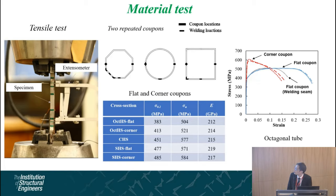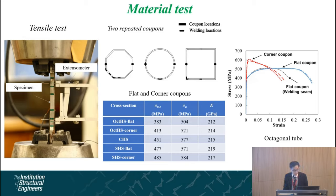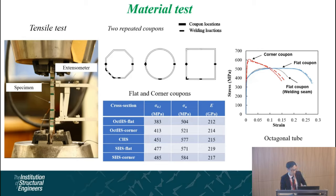We conducted tensile coupon tests for the steel material, extracting coupons from the fabricated steel tube. We considered material properties at the flat region, corner region, and welding region. We found that the yield stress at the corner region is much higher than the flat region due to the cold-forming process. For the welding region in the longitudinal direction, the yield stress is almost the same as the flat region, but the ductility is much lower.